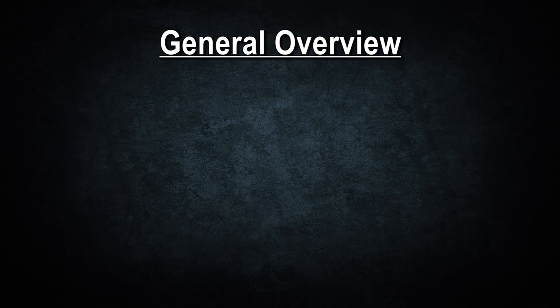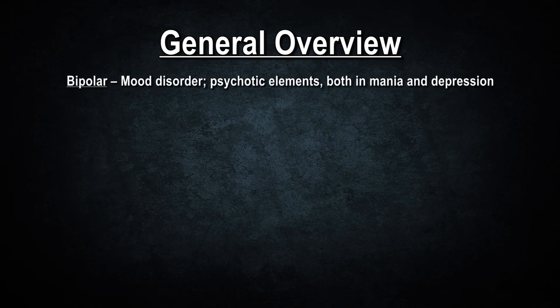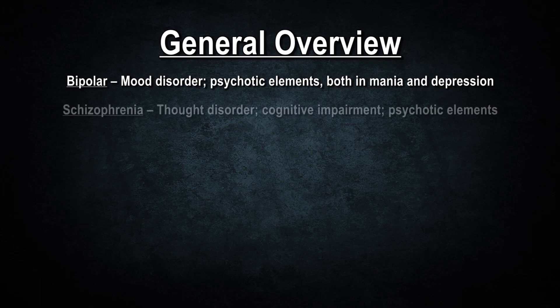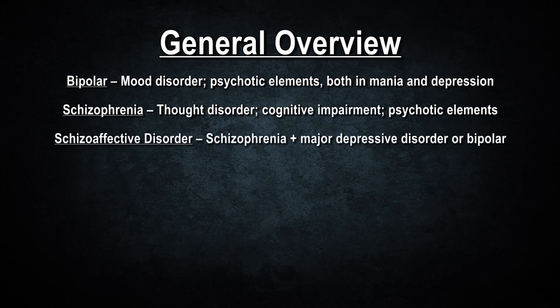A general overview: bipolar is a mood disorder which can have psychotic elements, both in mania and depression. Mood swings can be rapid cycling and can occur very frequently with little to no reason. Schizophrenia is a thought disorder affecting the cognitive function of the brain — it is also a psychotic disorder. Schizoaffective disorder is a combination of schizophrenia and a mood disorder. Schizophrenia cannot be diagnosed if a mood disorder is present, and if psychotic elements are present during the time that the mood disorder is not, then it is schizoaffective disorder.